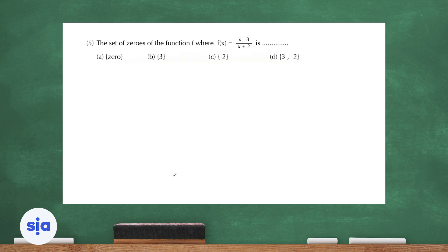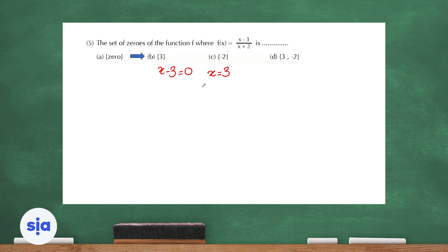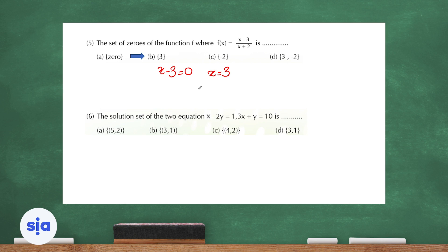Question 5: the question is asking for the set of zeros of the function f where f of x equals x minus 3 over x plus 2. The set of zeros are the values of x that make the function equal 0. We set x minus 3 equals 0, so x equals 3. The choice is choice B.